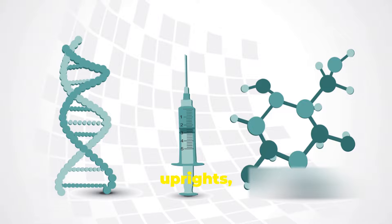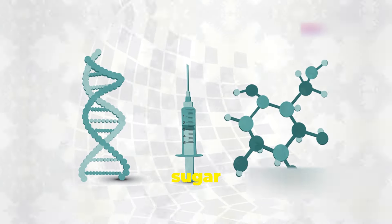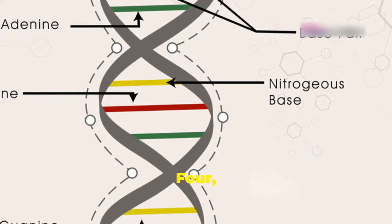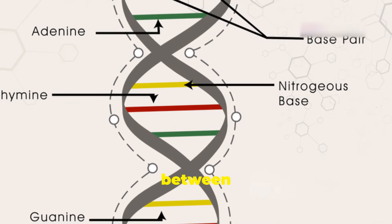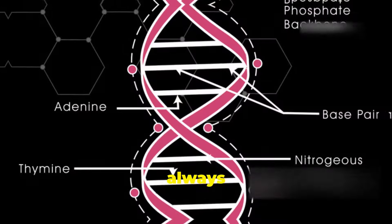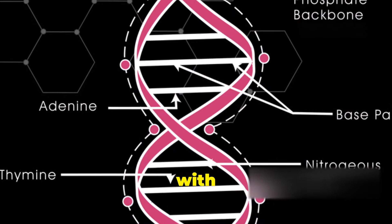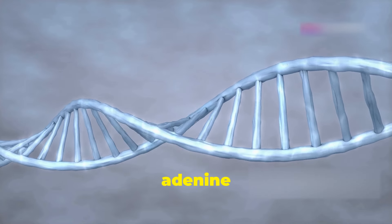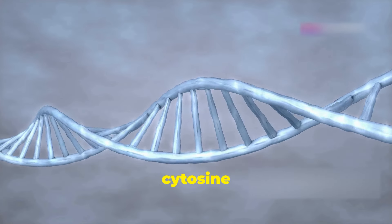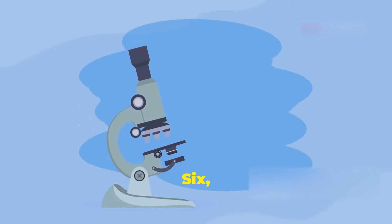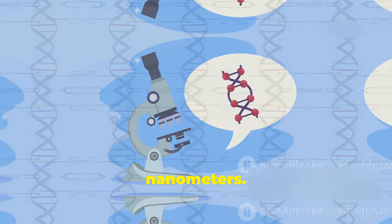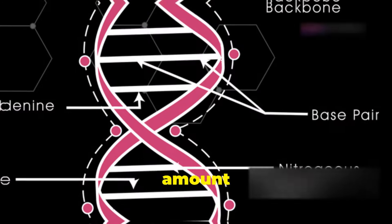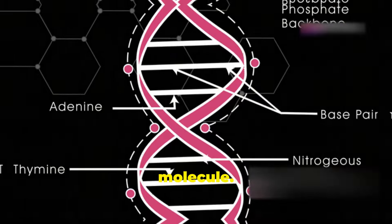(3) The backbone, or uprights, of the molecule are composed of the sugar and phosphate parts of the nucleotide, while the bases form the rungs. (4) There is specific base pairing between bases, meaning adenine always pairs with thymine, while cytosine always pairs with guanine. (5) There is double hydrogen bonding between adenine and thymine, and triple hydrogen bonding between cytosine and guanine. (6) The diameter of DNA is about 2 nm. (7) The amount of adenine and thymine is always equal, and the amount of cytosine and guanine is always equal in the DNA molecule.